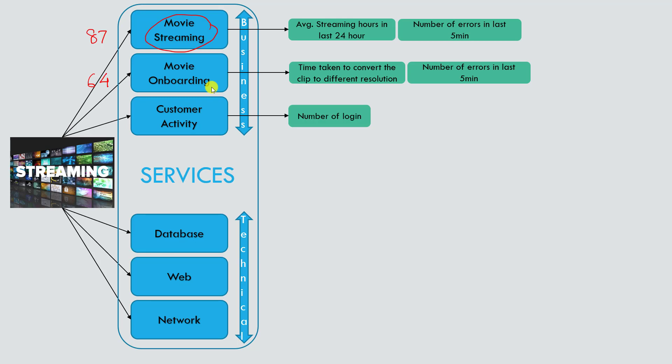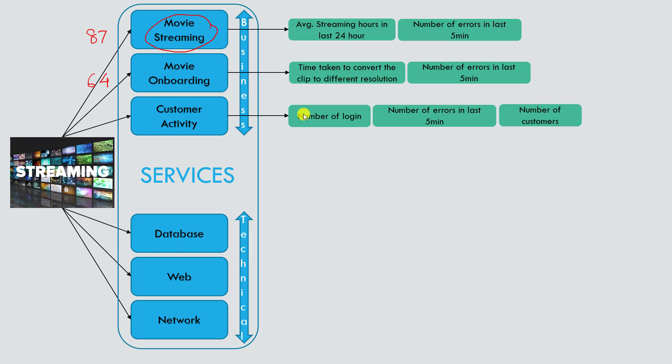For the customer activity service, KPIs could be the number of logins, the number of errors customers are facing in the last five minutes, and the number of active customers. If logins are increasing drastically, we may need to evaluate whether our infrastructure can support the load. If logins are decreasing drastically, we need to investigate why. These are the kinds of insights you need to analyze when defining your KPIs.